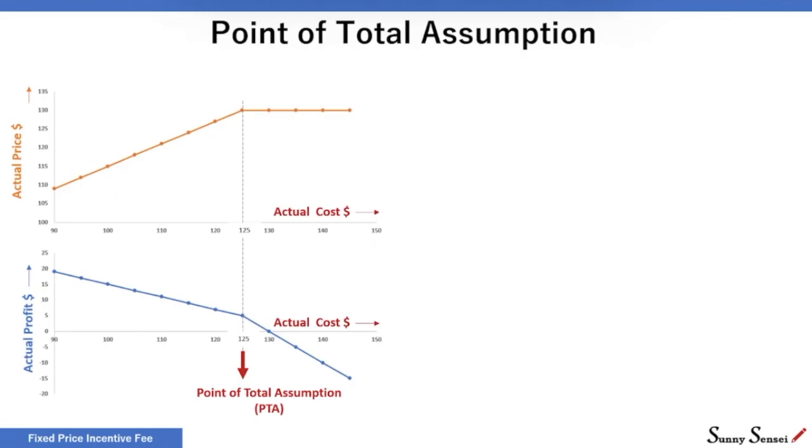In the top plot, we have actual price against the actual cost. In the bottom plot, we have actual profit against actual cost. PTA, or the Point of Total Assumption, divides the plots into two distinct sections. Region 1, where the share ratio as given in the contract is valid. Actual price changes with actual cost and is calculated with this formula.